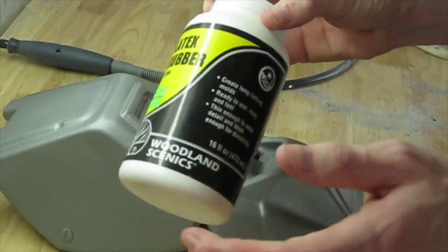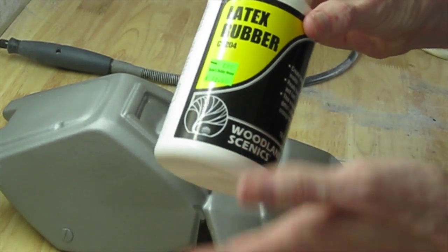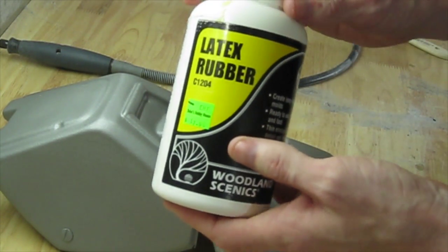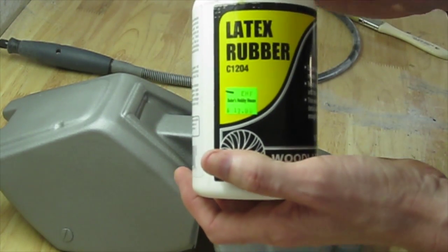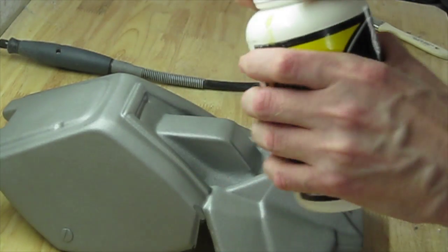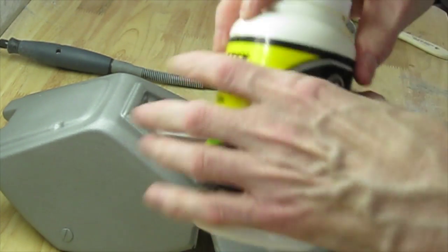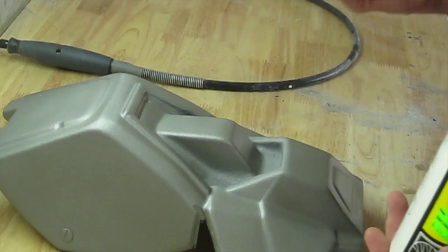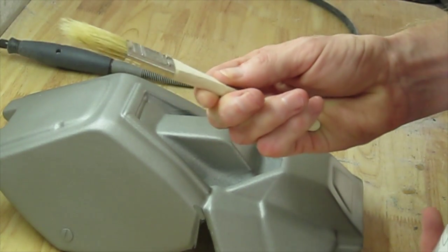You can find this at most craft stores or really anywhere that sells model railroads or model railroading things. And then just a one inch chipping brush.